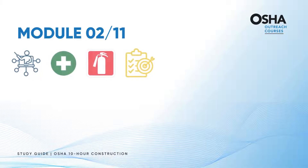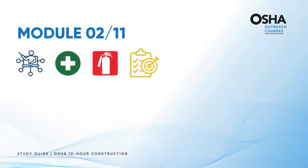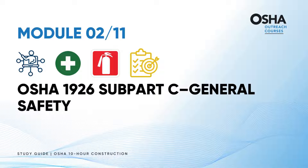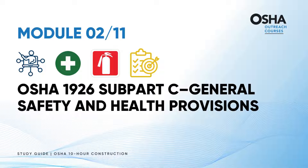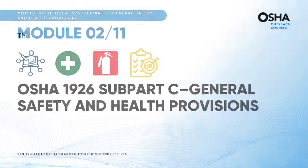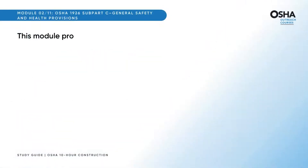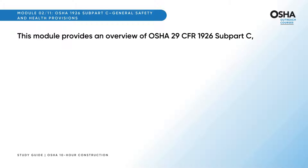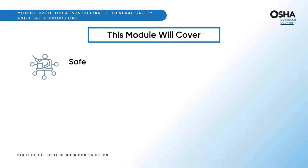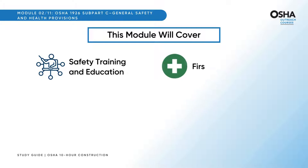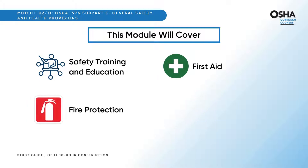Now, let's discuss Module 2, which is about OSHA 1926 Subpart C, General Safety and Health Provisions. This module provides an overview of OSHA 29 CFR 1926 Subpart C, General Safety and Health Provisions. This module will cover safety training and education, first aid, fire protection, and employee emergency action plans.